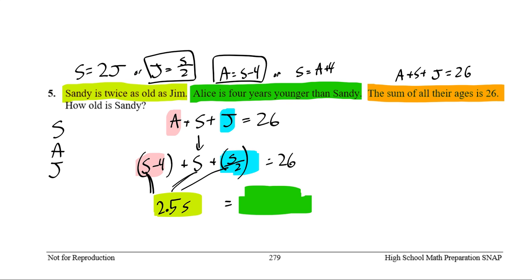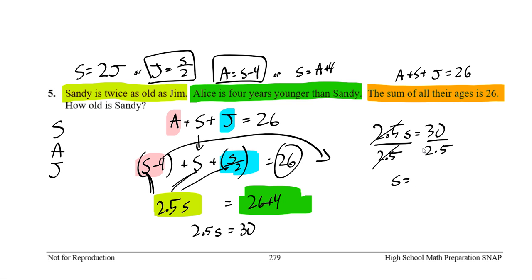And for the numbers, I've got a negative 4 on the left, and a 26 on the right. So if I move that negative 4 over, it's going to become positive 4. So that's going to be 30. So I've got 2.5 S. 2.5 times Sandy's age is going to be equal to 30. So if I have 2.5 S equals 30, and I want to find S, I can divide both sides by that coefficient of S, 2.5, and I'll find that S is equal to 30 over 2.5, which is 12.